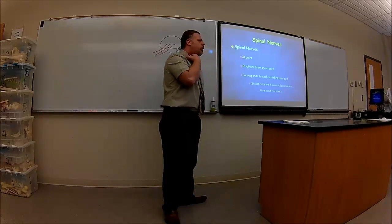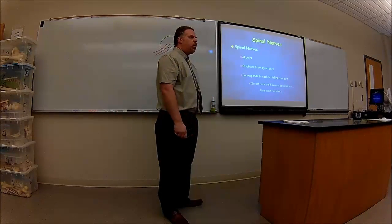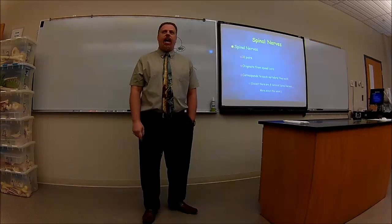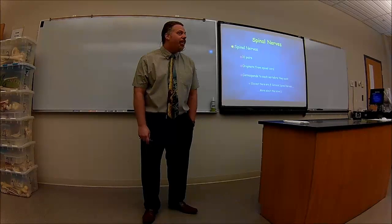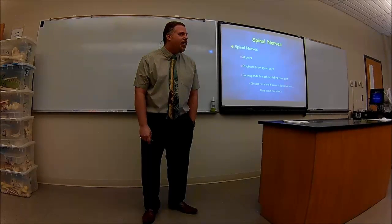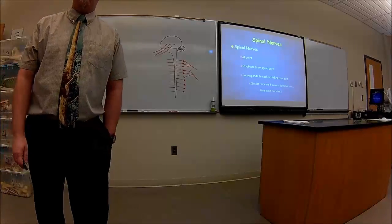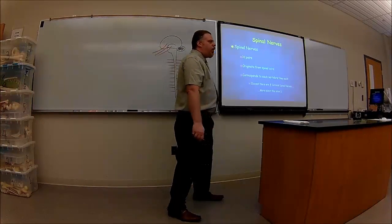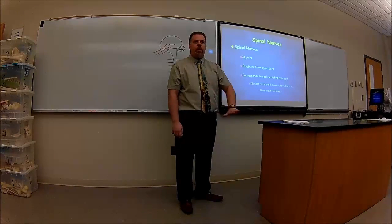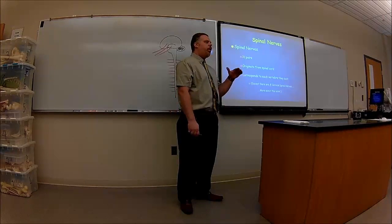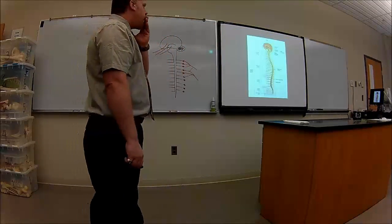Spinal nerves: 31 pairs, originating from the spinal cord, corresponding to each vertebra they come out of. The only exception is we have eight cervical spinal nerves but only seven cervical vertebrae. We'll talk about that later — one nerve comes above the vertebra in the cervical area, adding an extra one. We'll show you that when we get into the spinal cord chapter.